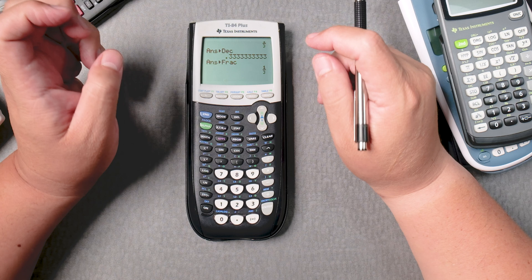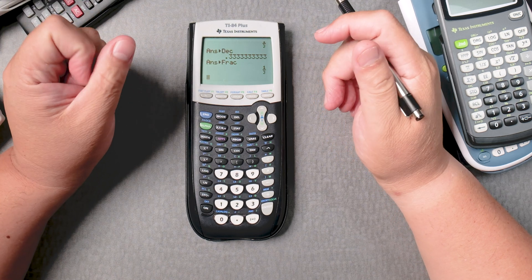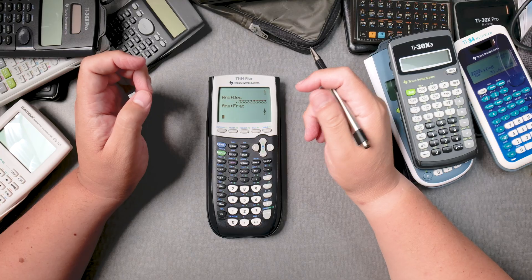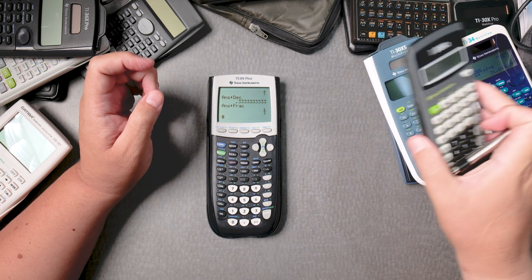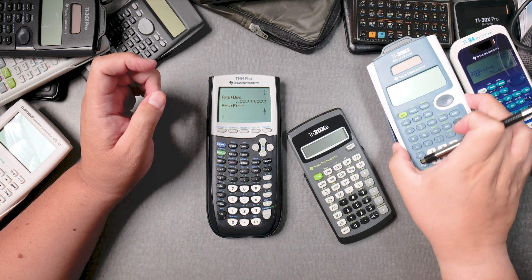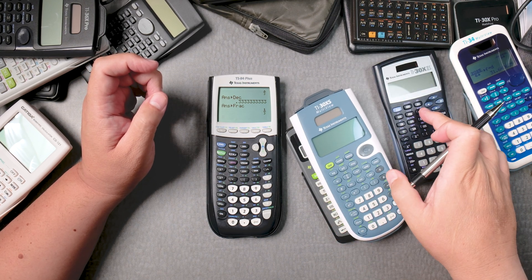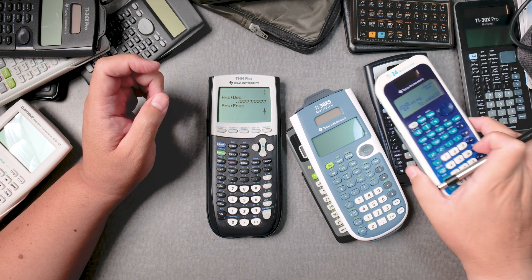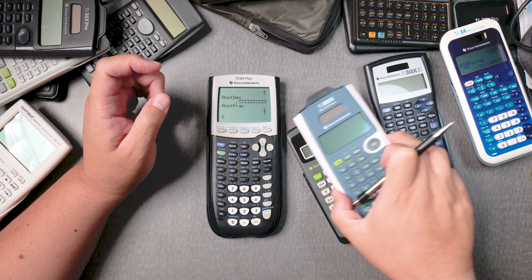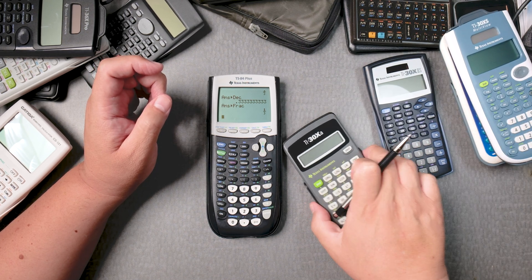So let's say you wanted to add 5 and 1 fourth plus 3 over 8. It's much easier to do it on the smaller calculators—the TI-30, this other 30, this multi-view, even the pro one right there.